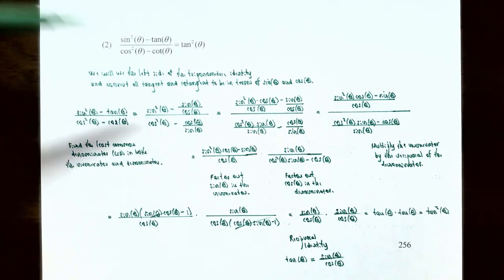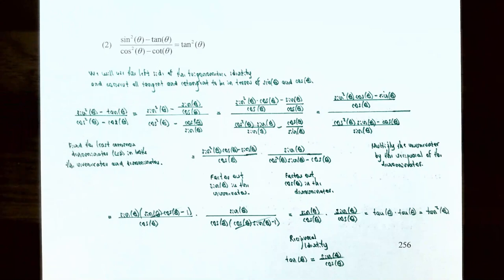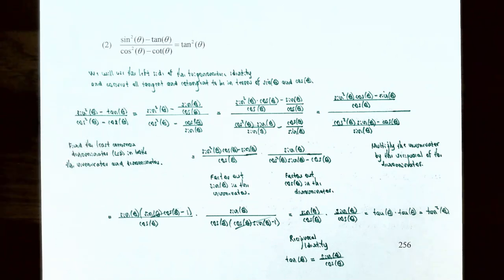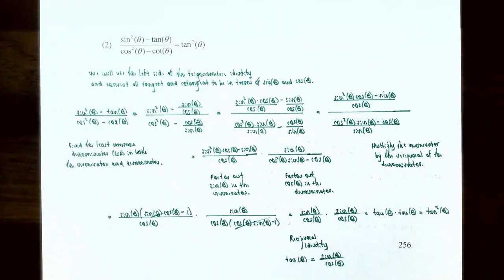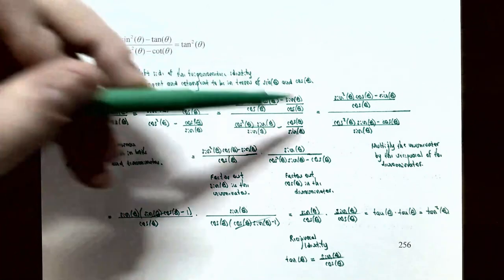Let's work on the numerator. We have two terms to subtract, one of which is a fraction, so we need a common denominator of cos θ. Rewrite sin²θ with cos θ in the denominator by multiplying it by cos θ, giving sin²θ · cos θ / cos θ. The second fraction, sin θ / cos θ, already has cos θ in the denominator, so it stays the same: minus sin θ / cos θ. That gives us one combined fraction in the numerator of the larger fraction.